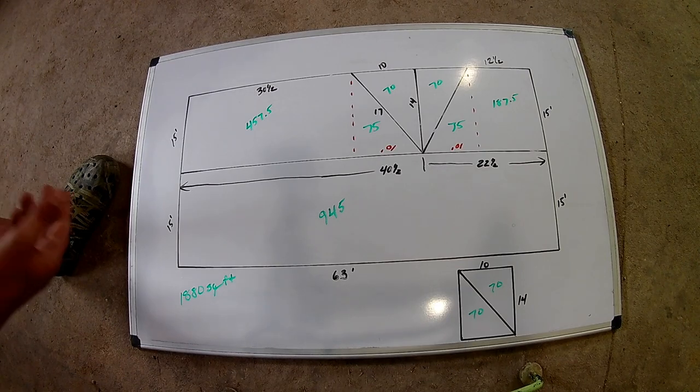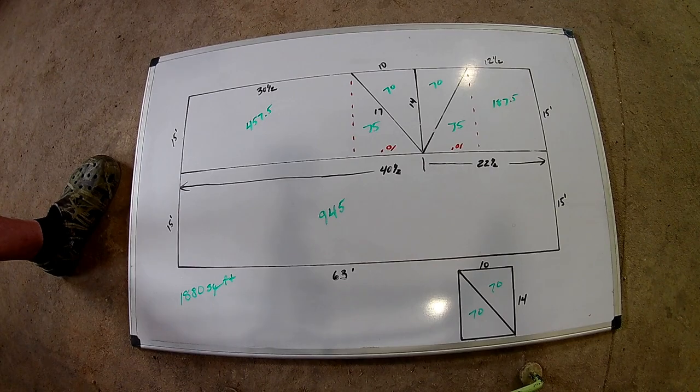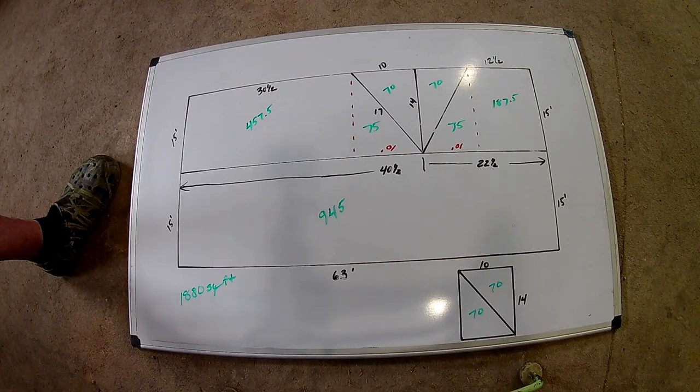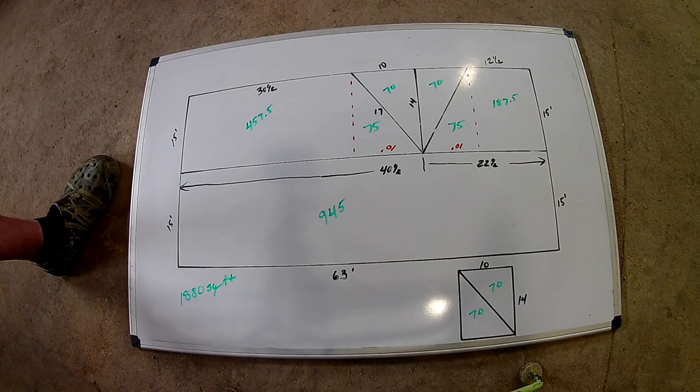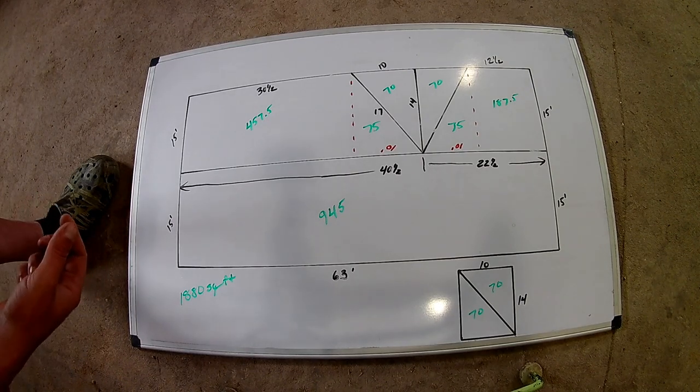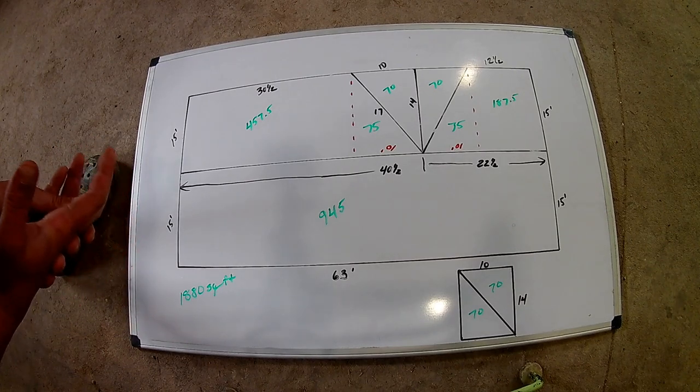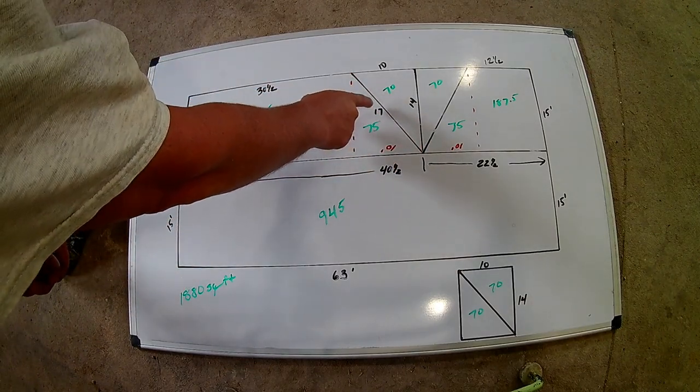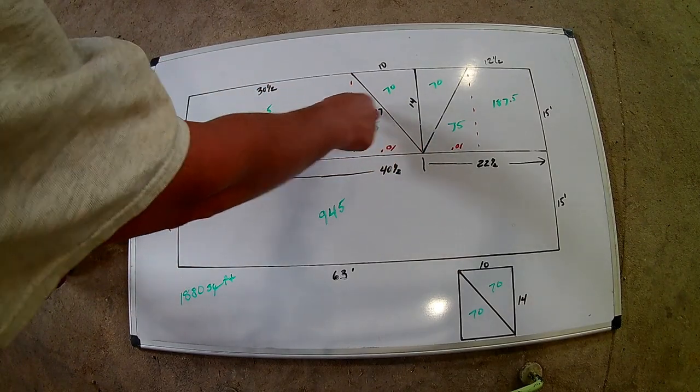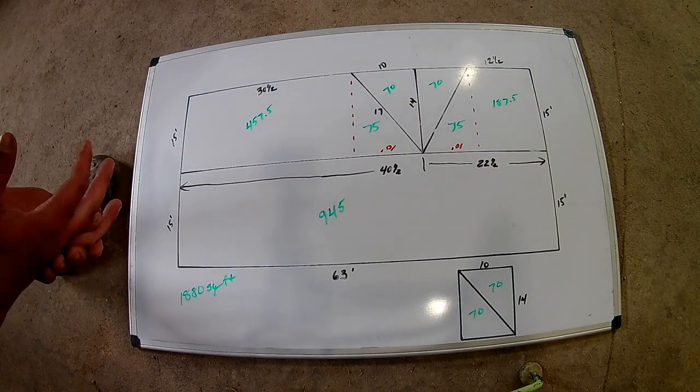And that's pretty much it. Depending on the area and code requirements, you'll want to figure out how much ice and water shield you're going to need, how much tar paper you're going to need. I find a 20 square roof, one box of nails and one box of staples is sufficient. If you're going to be putting in valley metal, you know that you have 17 feet plus 17 feet. So you would probably want to just get a 50 foot roll of that.